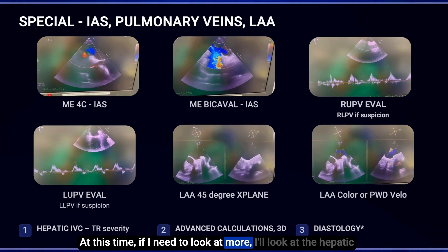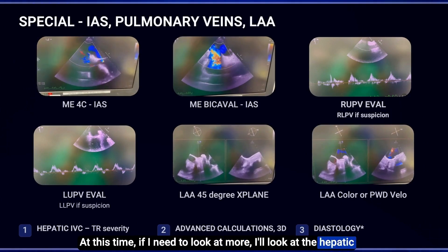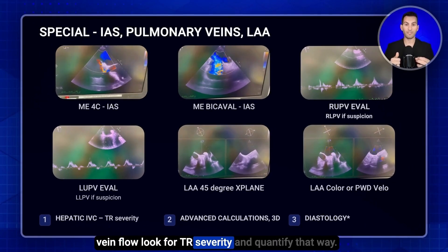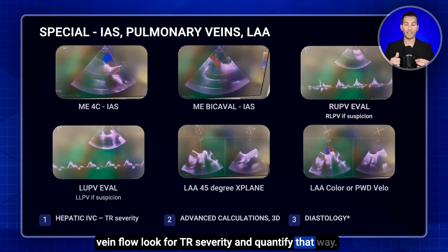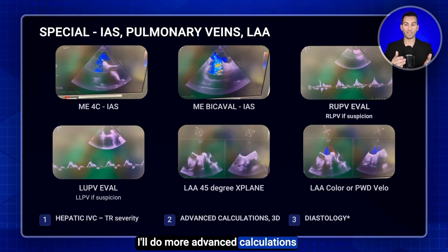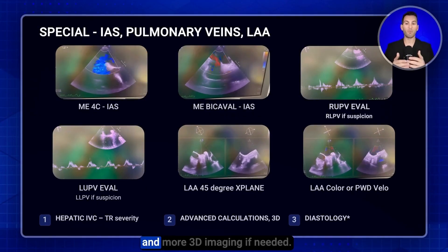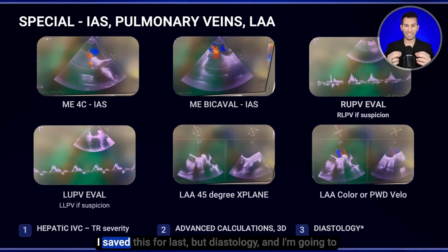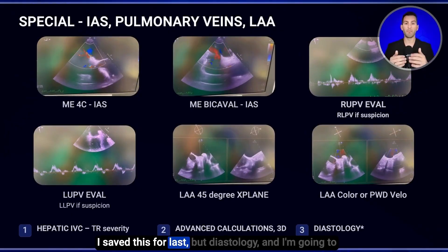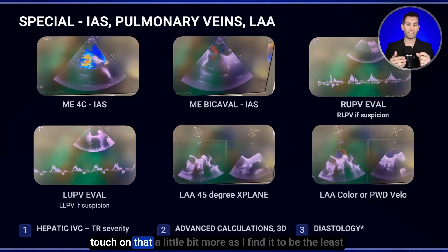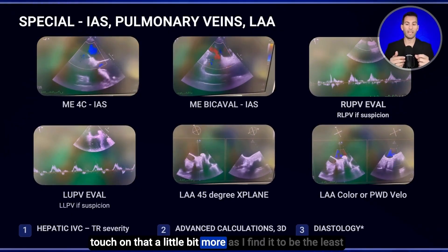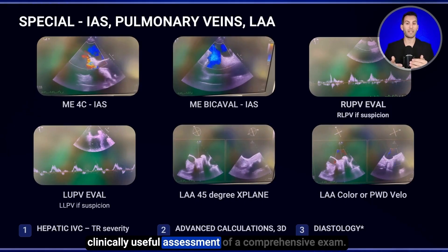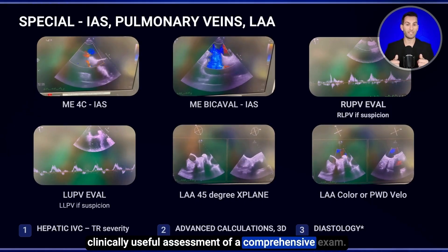At this time, if I need to look at more, I'll look at the hepatic IVC flow to look for TR severity and quantify that way. I'll do more advanced calculations and more 3D imaging if needed. And I save diastology for last, as I find it to be the least clinically useful assessment of a comprehensive exam.